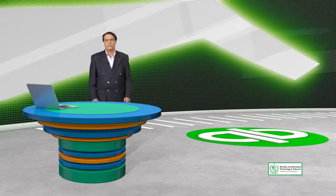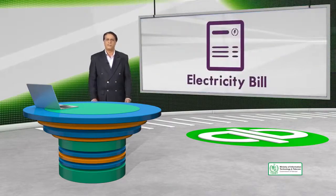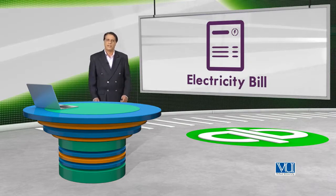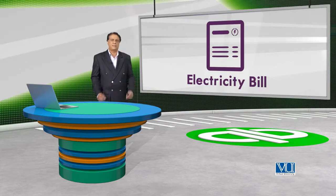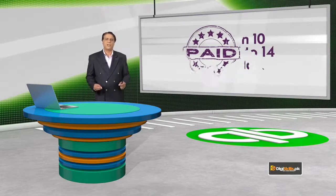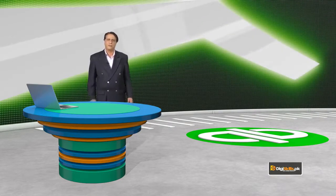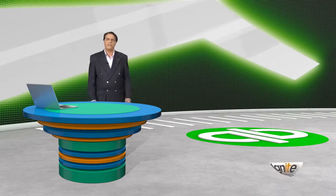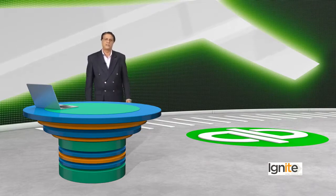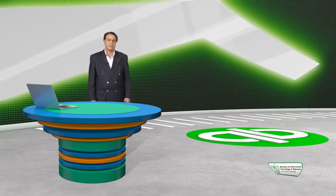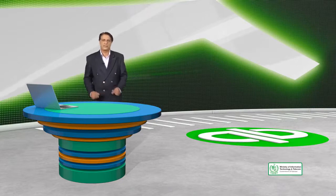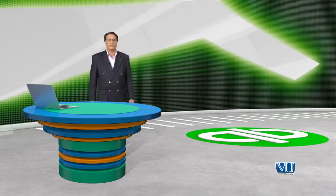आइए एक छोटी सी मिसाल देखते हैं कि accounts payable में होता क्या है. एक मिसाल के तौर पे utility company — जो कि बिजली की कंपनी हो सकती है — आपको आपके बिजली का बिल based on your consumption भेजती है. आपने ये बिल फौरी अदा नहीं करना होता — दस या दो हफ्ते के अंदर अदा करना होता है. Accounts payable का तरीका ये है कि इसको हम फौरन record करते हैं, और इसकी last date अपने पास जरूर रखते हैं ताकि हमें पता हो कि इस date से पहले ये चीज़ अदा करनी है.